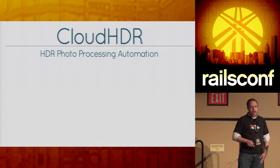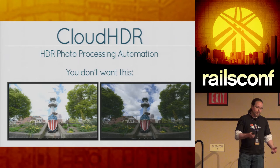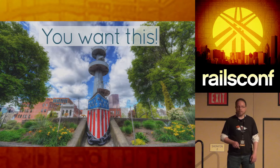Cloud HDR is an HDR photo processing automation web app. Basically what it does is take a couple of photos that aren't very good — one's overexposed, one's a little underexposed — and turn them into something that's a lot more attractive.